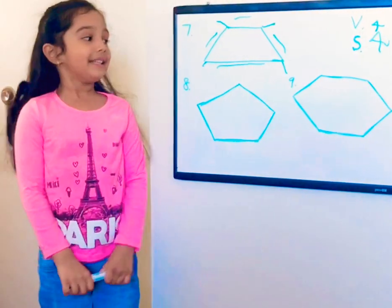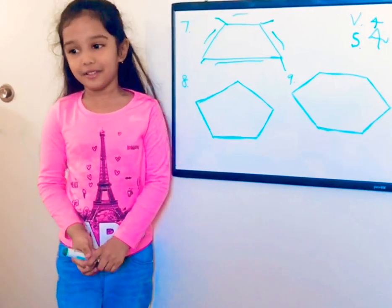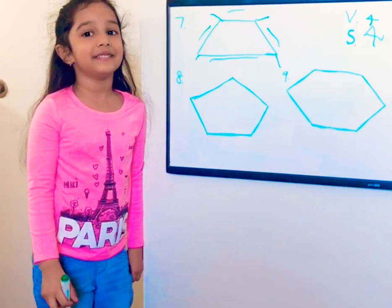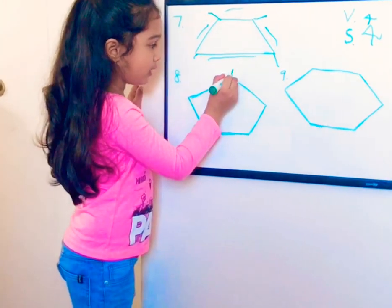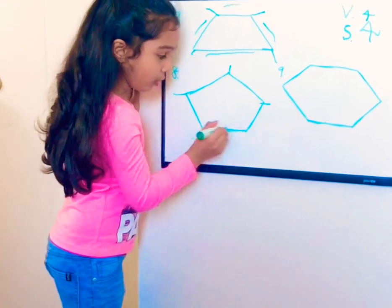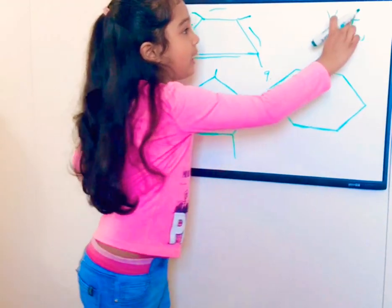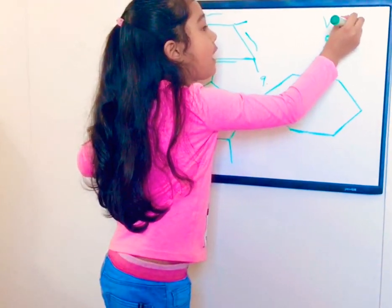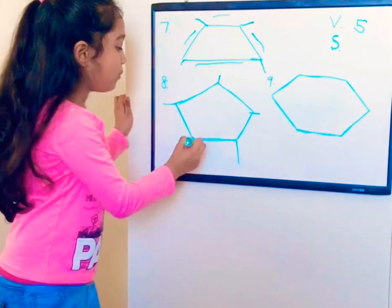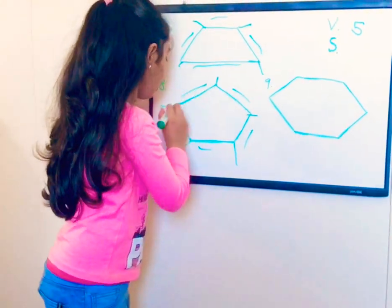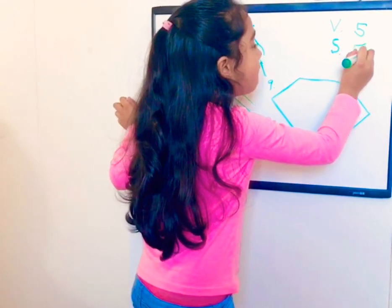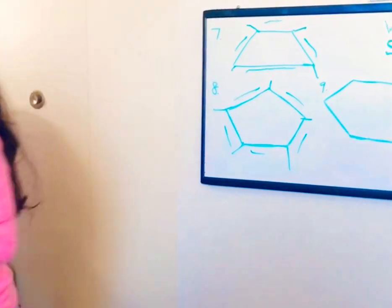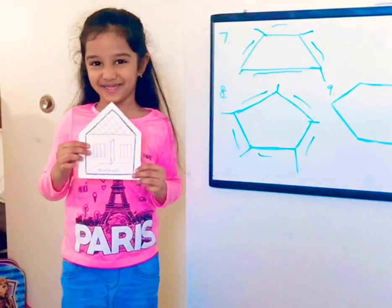Next is pentagon. Let's count how many vertices and sides there are. One, two, three, four, five — it has five vertices. And one, two, three, four, five — it has five sides. This house looks like a pentagon.